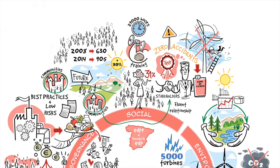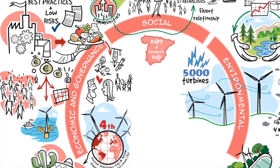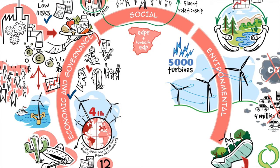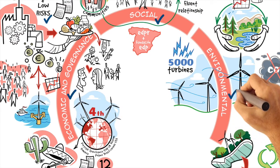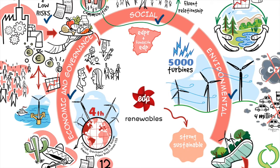So, remember our company's long-term competitiveness and low-risk activities are supported by three pillars: economic, social, and environmental. All of them critical to maintain EDPR strong, sustainable, and growing.